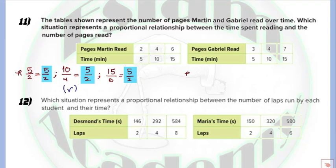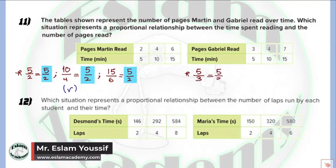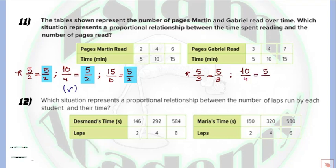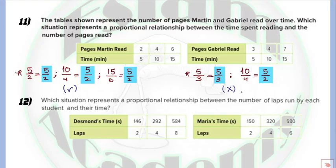For the second table: the first rate is 5 over 3, which in simplest form is 5/3. But the second rate is 10 over 4, which simplifies to 5/2. The two rates are not equal, so this is not a proportional relationship. And that is how we differentiate between proportional and non-proportional relationships.